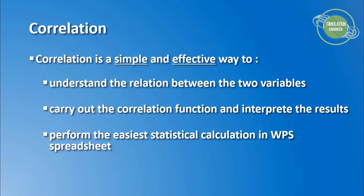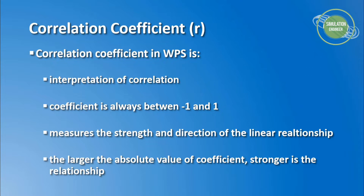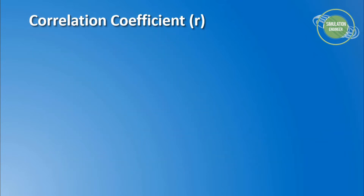A very important indicator when doing data correlation in WPS spreadsheet — which equally applies to Microsoft Excel and Google Sheets — is the correlation coefficient. The correlation coefficient is an indicator or degree that gives you an idea about the trend: whether it's strong, weak, or moderate. The coefficient always lies between minus one and one, measuring the strength and direction of your linear relationship. The larger the absolute value of the coefficient, the stronger the relationship.